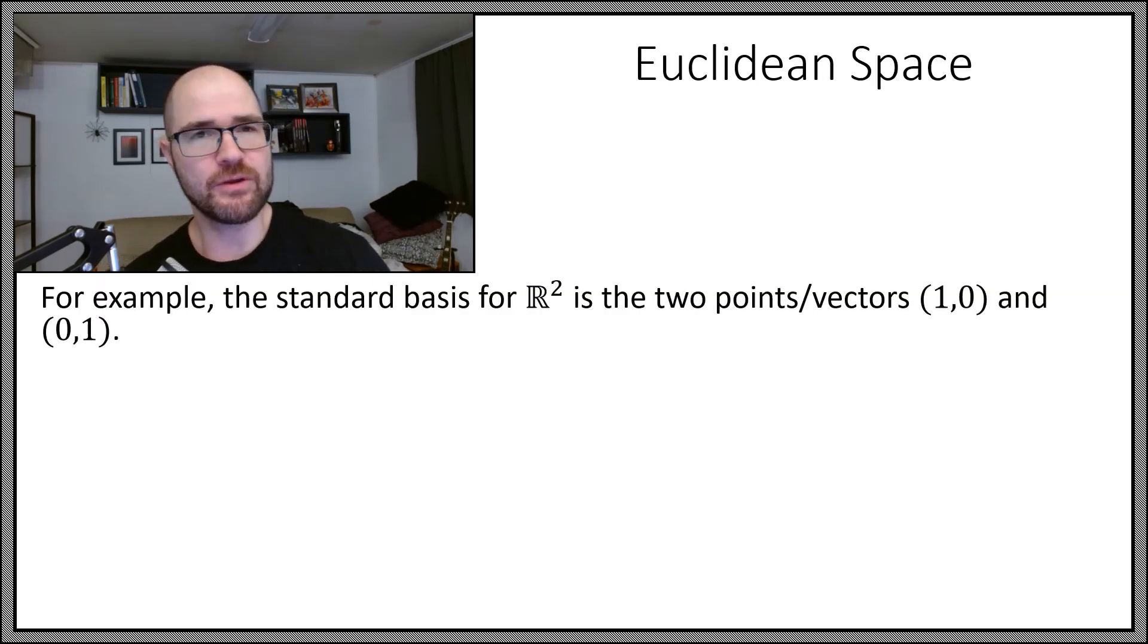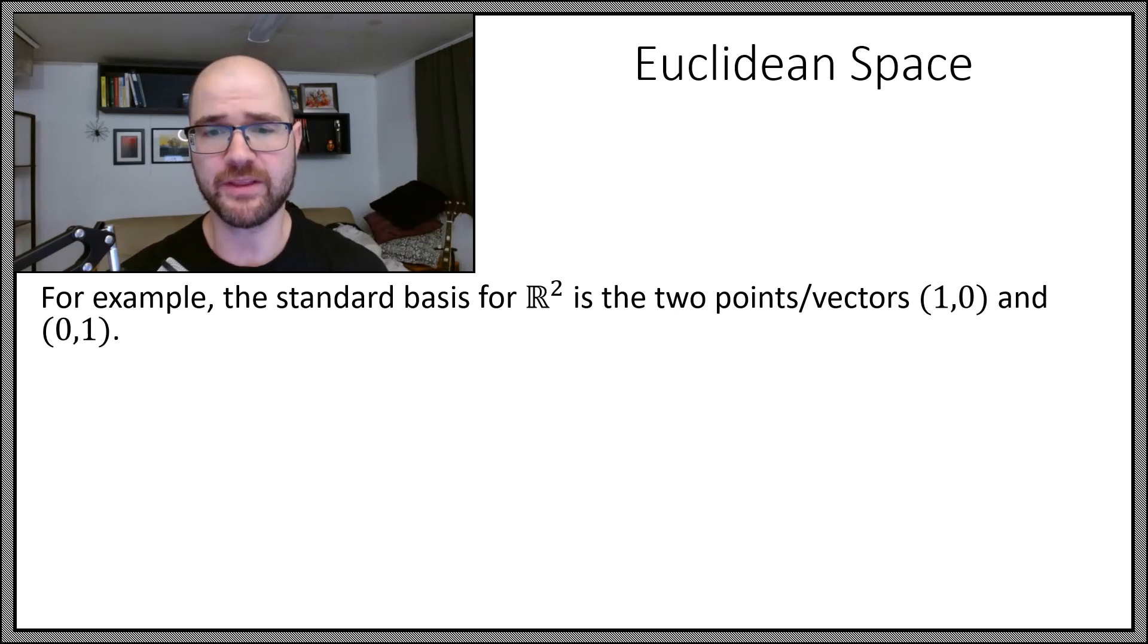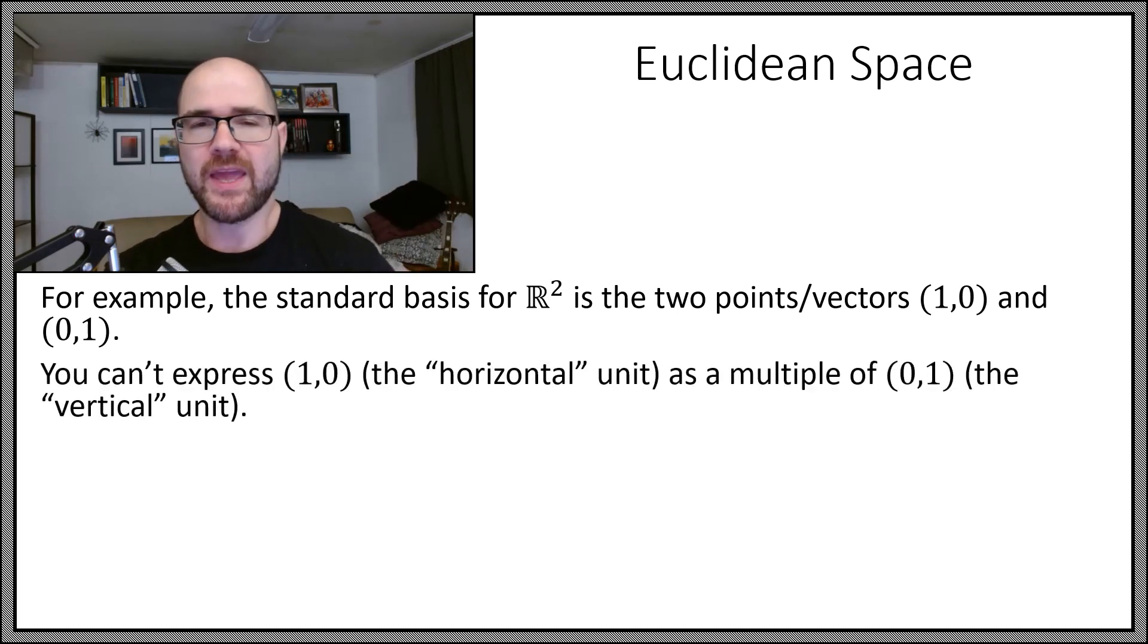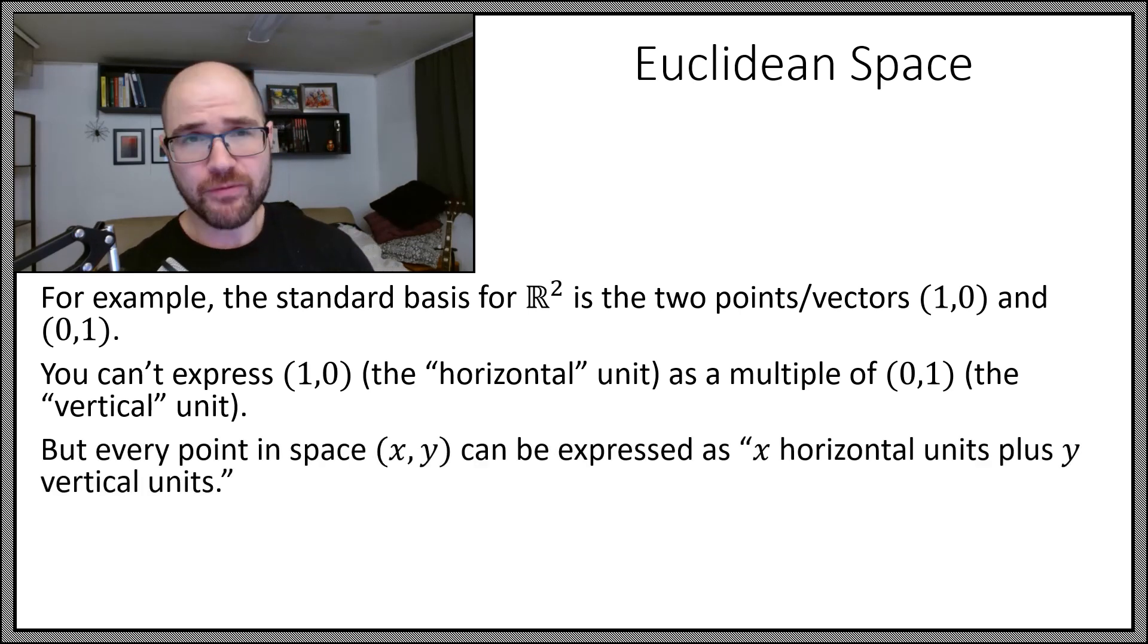So let's talk about Euclidean space. The standard basis is the two points or vectors, and I'm going to muddy the waters here and conflate them, but the point (1,0) and (0,1). You can't express (1,0) as a multiple of (0,1), the vertical unit, but every point in space is x horizontal units and y vertical units. So the two objects cannot be expressed in terms of one another, but everything in the plane can be expressed in terms of those two objects. That makes it a basis.